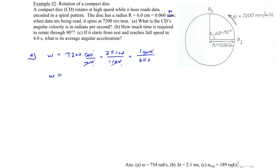Using our calculator, we multiply 7200 by 2π and then divide by 60. That gives 753.98, which I'm going to round off to 754 radians per second. That's part A.